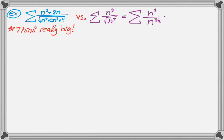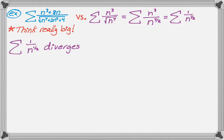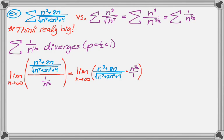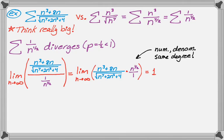Using a rational exponent and properties of exponents, I get down to 1 over n^(1/2). Since p equals 1/2 which is less than 1, this p-series diverges. Now taking the limit — I'll jump right to multiplying the nth term of the given series by the reciprocal of the nth term of the constructed series. The numerator and denominator end up with exactly the same degree, so we get the ratio of the coefficients, which is 1 over 1, so 1 — again positive and finite.